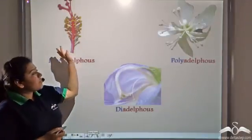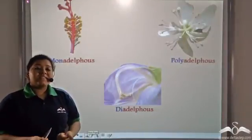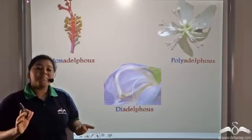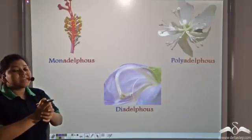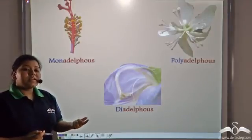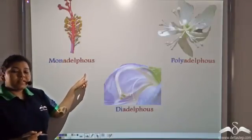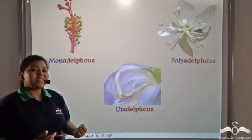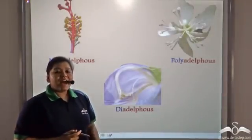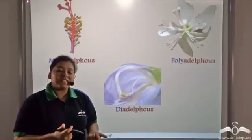These are the various arrangements of stamens. Stamens are present inside the androecium, which is the male part of a flower. If the stamens are fused together to form a single unit, that arrangement is known as monadelphous. If the stamens form two groups, that arrangement is known as diadelphous. And if the stamens form multiple groups, that arrangement is known as polyadelphous.